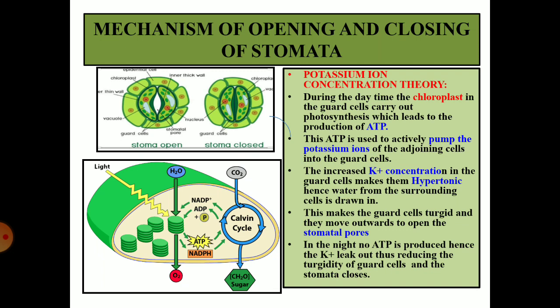In our syllabus we will be studying only the potassium ion concentration theory. During the daytime, the chloroplasts in the guard cells carry out photosynthesis, leading to the production of ATP — adenosine triphosphate, the energy molecule. This ATP is used to actively pump potassium ions from the adjoining cells into the guard cells. The increased potassium concentration in the guard cells makes them hypertonic, meaning concentration inside becomes high. As a result, water from the surrounding cells enters into the guard cells, making the guard cells turgid, and they move outwards to open the stomatal pores.